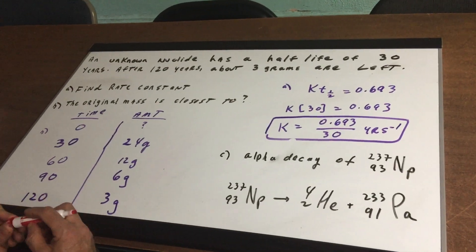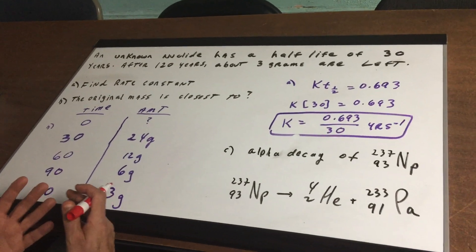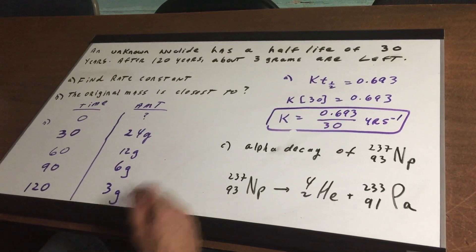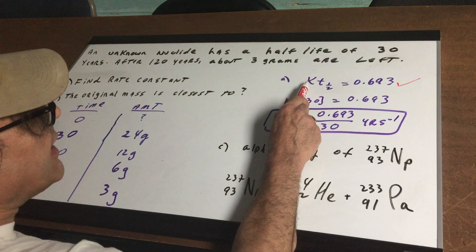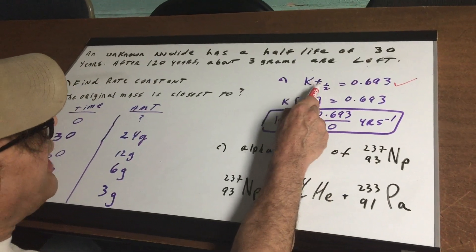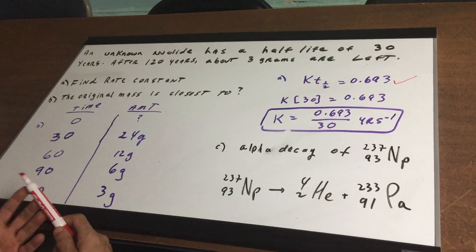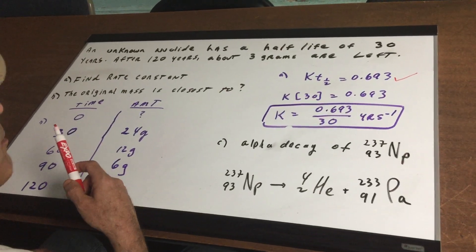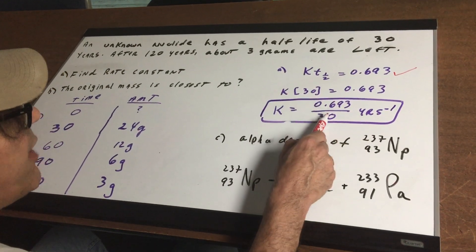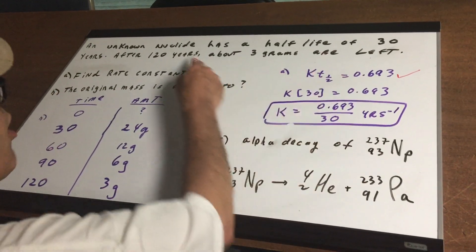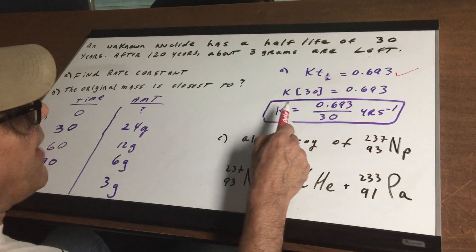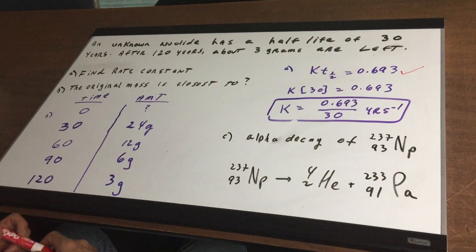The first thing I want to do is write the equation for half-life and rate constant of a nuclear reaction. This is simply a first-order decay process, and therefore the equation you need to memorize for the DAT is: K times T half-life equals 0.693. T-half just means the half-life, which is the amount of time for half of the sample to disintegrate. The half-life is 30 years, so K equals 0.693 over 30, with units of years to the minus 1. That's how you set up the equation for the rate constant.